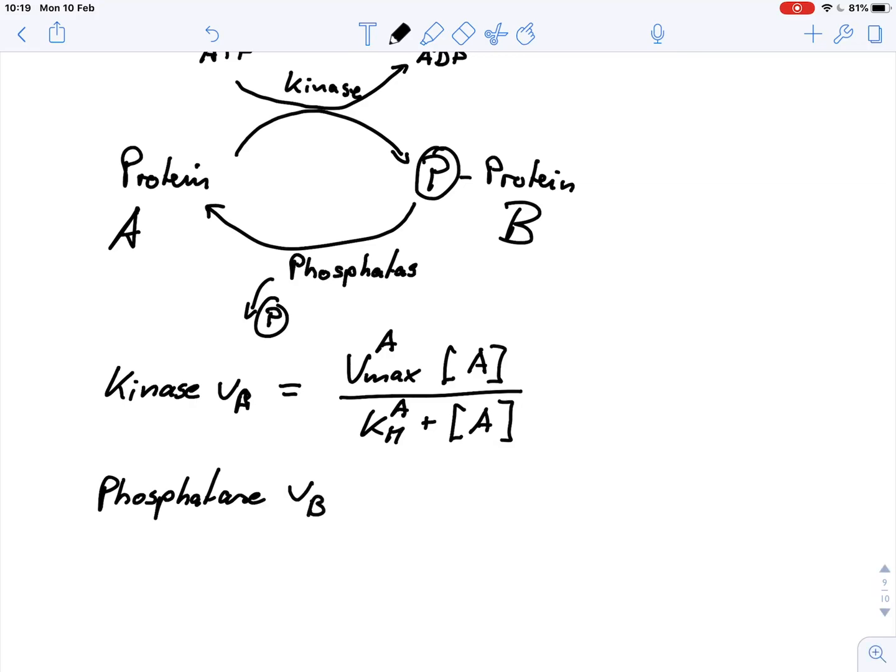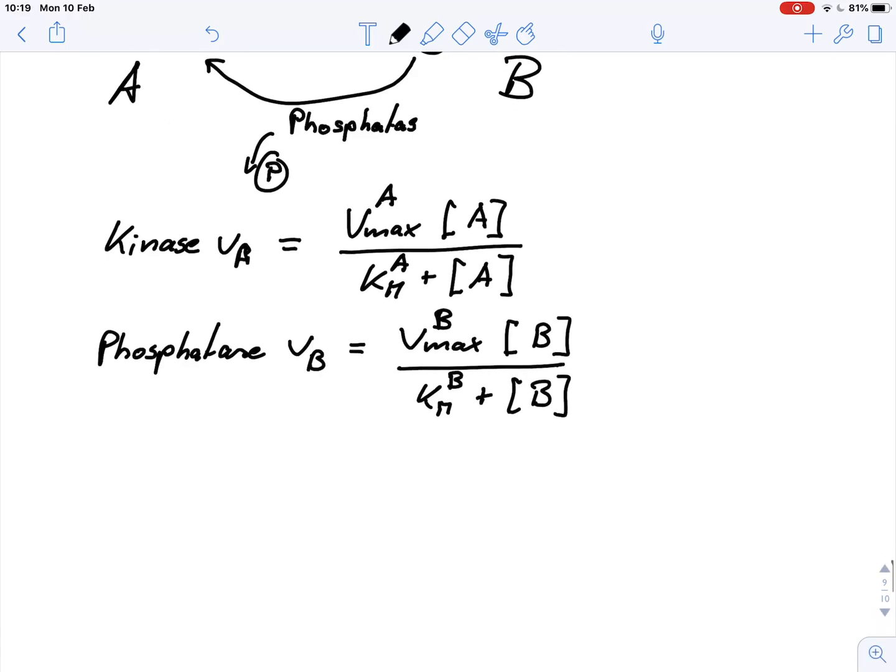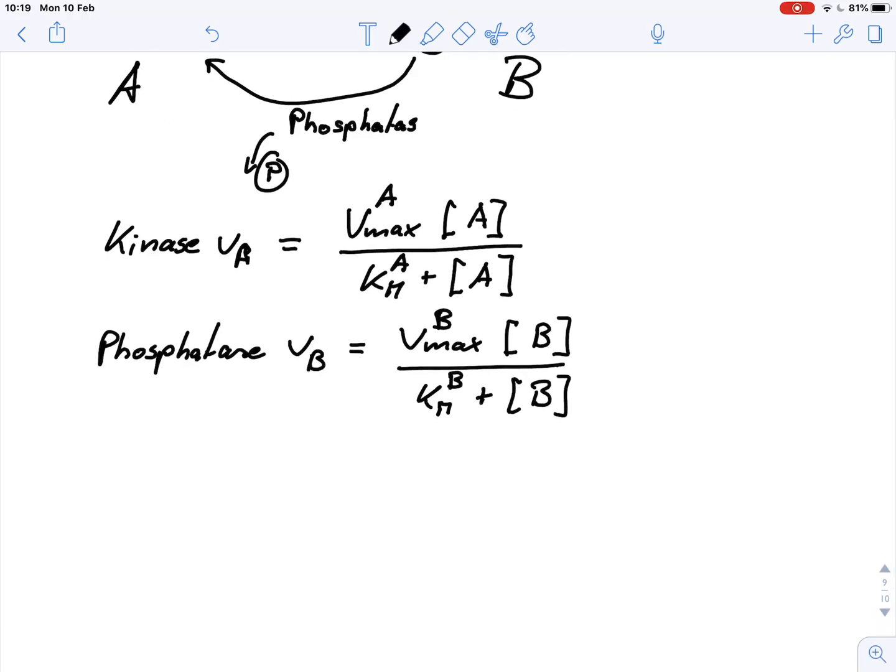And for the phosphoprotein, we can write the same thing, but this time it would be rate B equals Vmax for the phosphoprotein times the concentration of the phosphorylated protein, that was B, divided by Km for the phosphoprotein plus B. So these are basically our Michaelis-Menten equations, and there's nothing special about it so far.